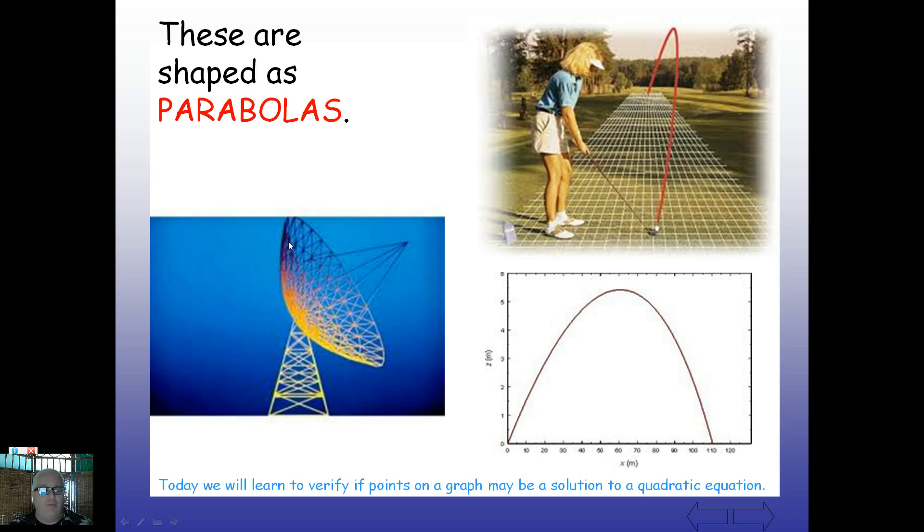Here's other forms of parabolas that you might be recognized already. This being a satellite dish has in the shape of a parabola. Here's a golfer. And when you strike a golf ball it's going to travel up in an arc and land again. Here's another image of that. Something like this. These are called parabolas.